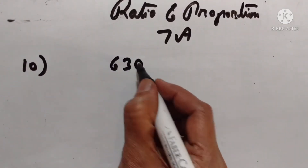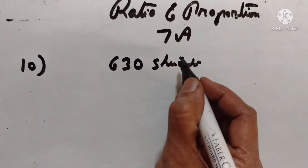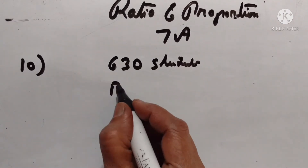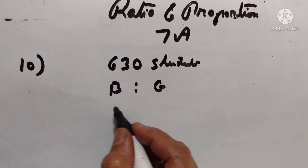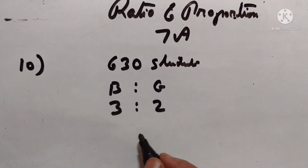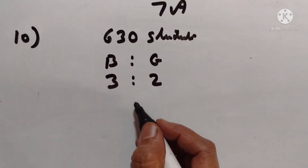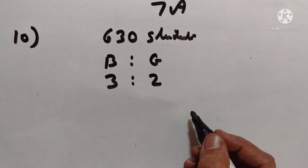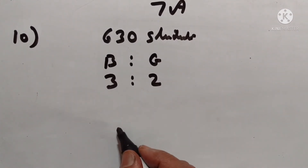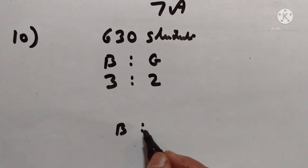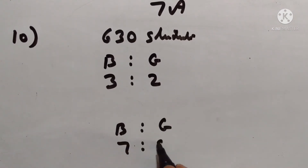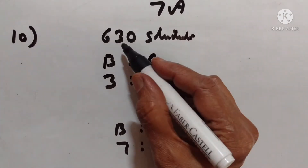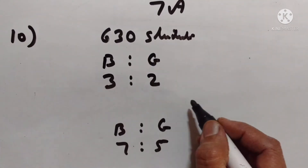A school has 630 students. The ratio of the number of boys to the number of girls is 3 to 2. The ratio changes to 7 to 5 after the admission of 90 new students. So 630 plus 90 is equal to now 720 students.